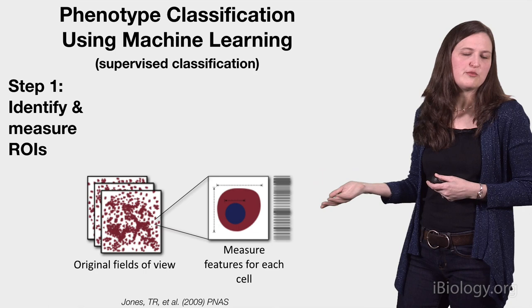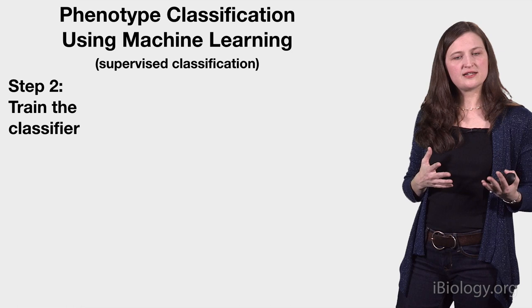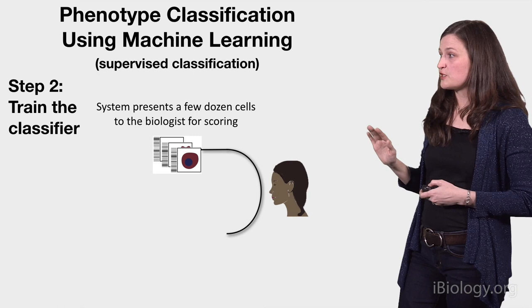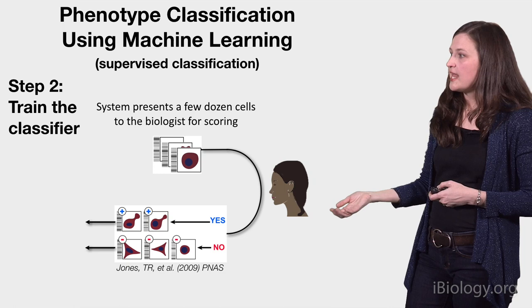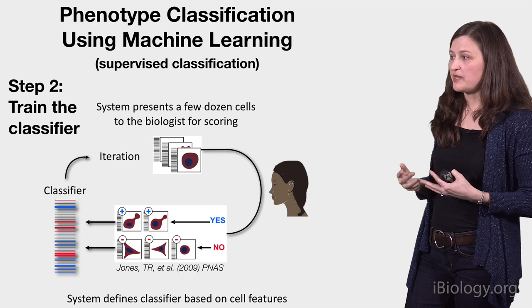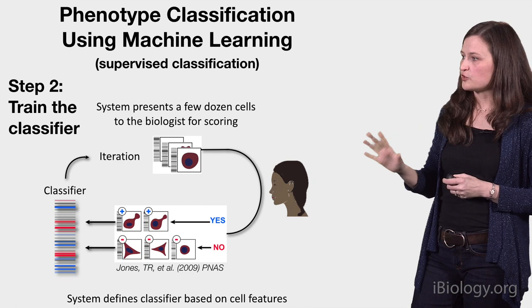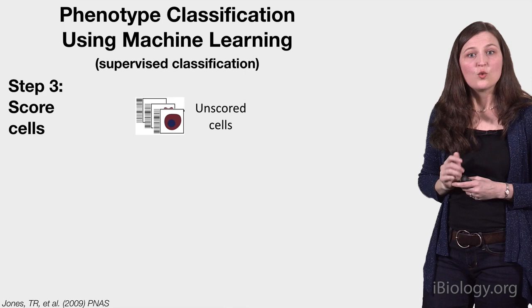In the next step, you train the classifier — a set of rules that the computer learns to distinguish the cells that have a given phenotype from those without. The computer learns by example: the biologist looks at random cells and scores them as having the phenotype or not, while the computer examines the measurements of those two classes and learns to distinguish them. As the biologist provides more examples and corrects errors, the classifier gets better. For a simple phenotype, you might need about 100 examples; for a more complex phenotype, maybe 1,000.